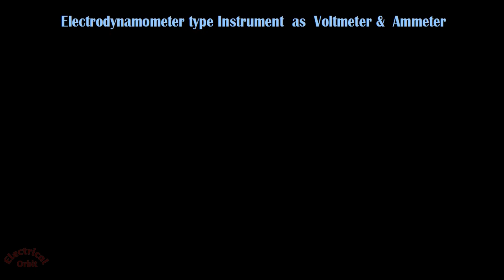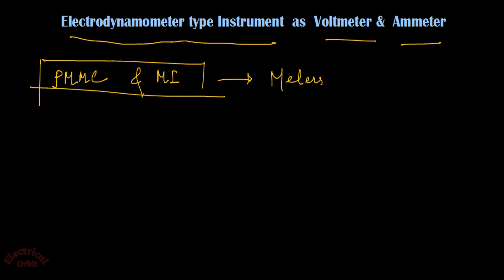In this lecture we are going to understand the usage of electrodynamometer type instrument as voltmeter and ammeter. Previously we studied PMMC and moving iron type instruments. The objective is the same: these instruments are capable of measuring both AC and DC quantities.